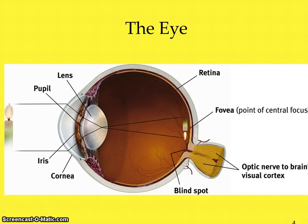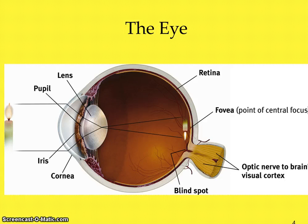Once light passes through the cornea, it then goes to the pupil of the eye, which is the adjustable opening. The size of the pupil is regulated by a muscle called the iris. The iris is what gives your eye its color. The iris either dilates or constricts based on how much light is passing through, so the iris helps control the size of the pupil.